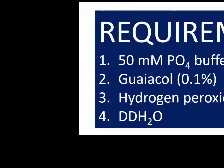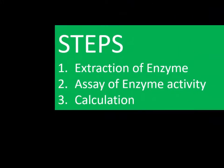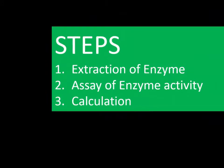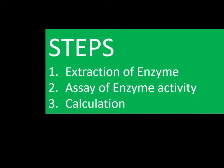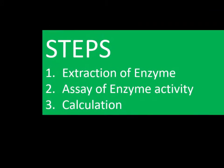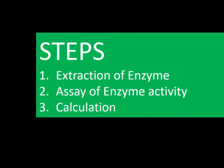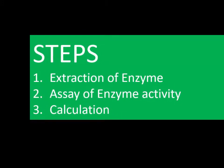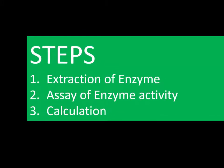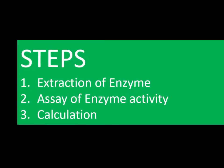The steps of peroxidase activity assay. The first step is extraction of enzyme extract from the plant tissue. The second step is assay of enzyme activities. The third step is calculation of enzyme activities.